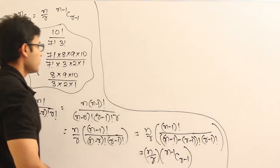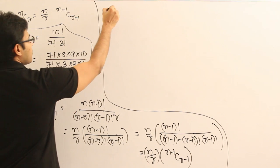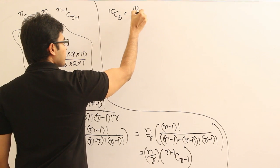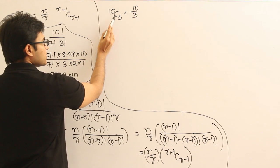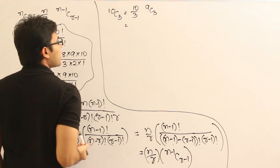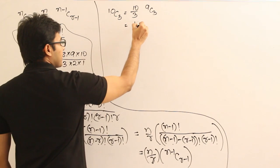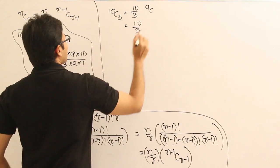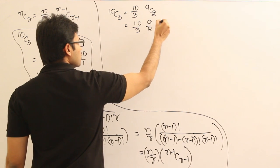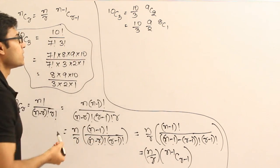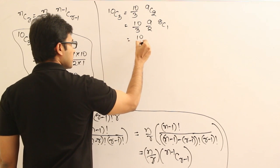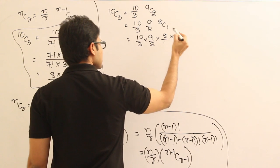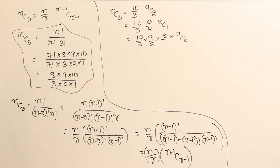Now what is the implication? Let's see how to write 10C3 using this formula. 10C3 can be written as 10 by 3 into 9C2. And 9C2 is 9 by 2 into 8C1. And 8C1 is 8 by 1 into 7C0. We know that 7C0 equals 7 factorial divided by 7 factorial into 0 factorial, which is 1.